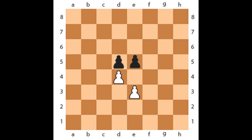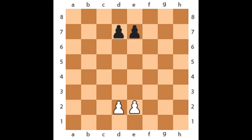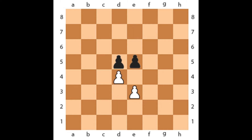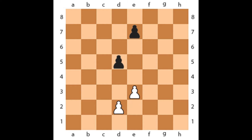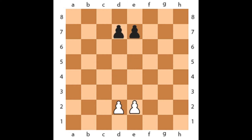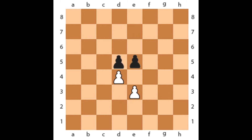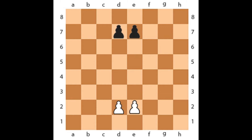The pawn is the least powerful piece on the chess board, but has the potential to promote to a higher piece. The pawn cannot move backward or sideward, but moves one square at a time. As an exemption to the rule, from its initial position, the pawn can move two squares as long as there are no obstructing pieces.